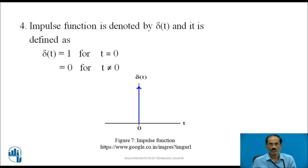The impulse function, denoted by δ(t), is defined as: δ(t) = 1 for t = 0, and 0 otherwise. The impulse function is present only at t = 0; at all other points its value is 0.